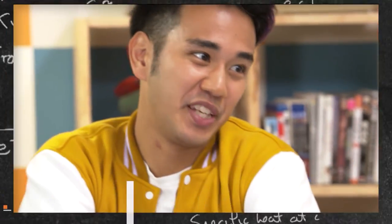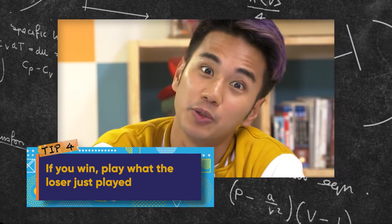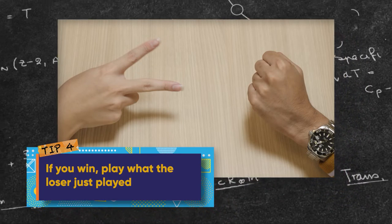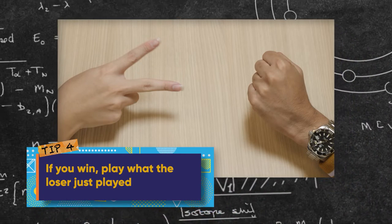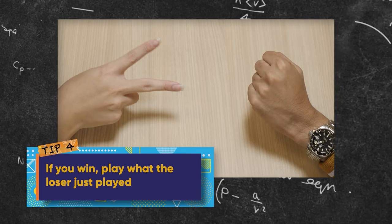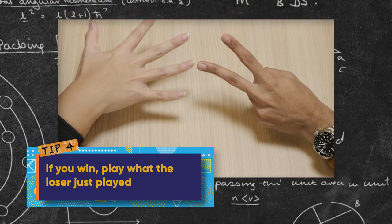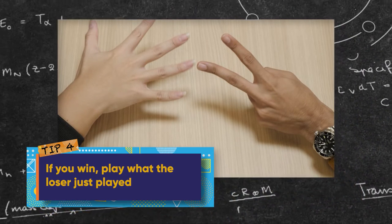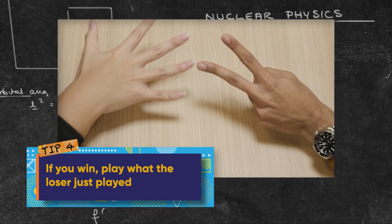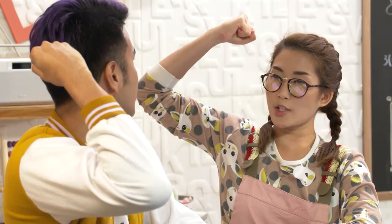Tip four: if you win, play what the loser just played. So, if you played stone and won, your opponent will be expecting you to go with stone. So, change to what he played instead, which is scissors. They expect you to stay with stone, so they'll be playing paper to defeat your stone — and you will win again!